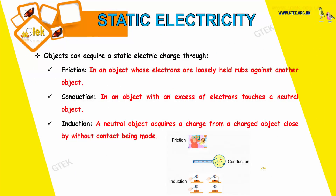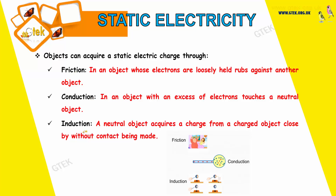We shall now see about static electricity. Objects can acquire a static electric charge through friction, conduction, and induction. Conduction is nothing but an object whose electrons are loosely held that rubs against another object — this is termed as friction.